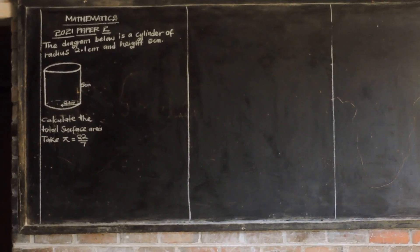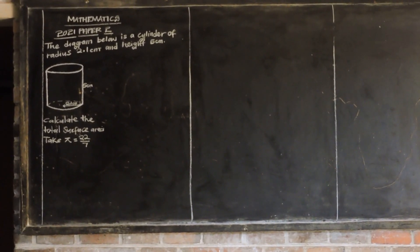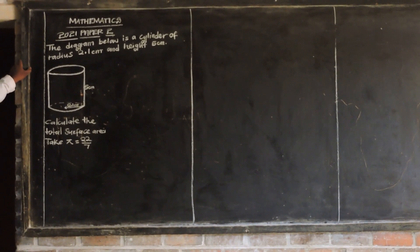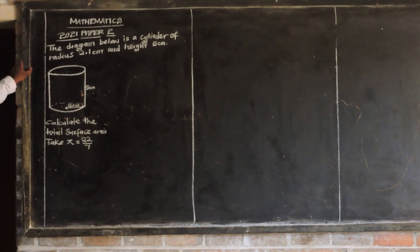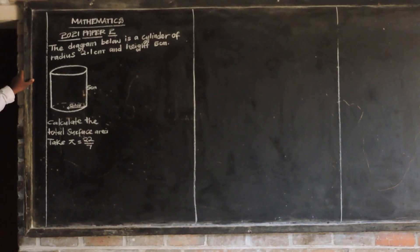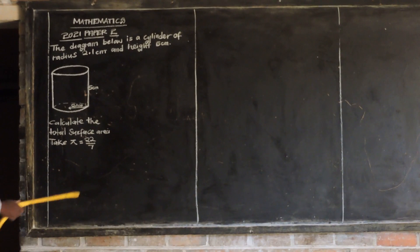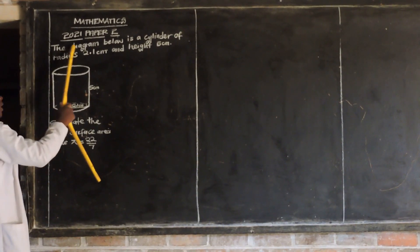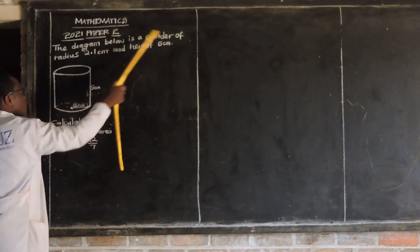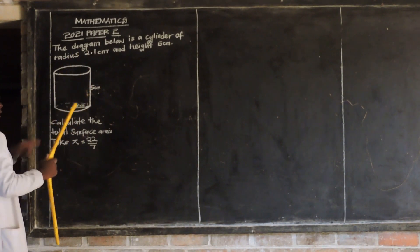We are looking at the translation and the topic. I'm going to go to the exam papers. The first one is 20-21-2. It's saying that the diagram below is a cylinder of radius 2.1 centimeters.